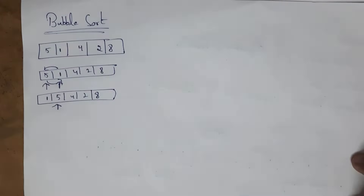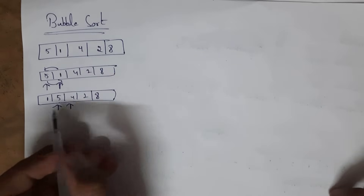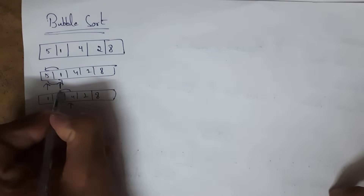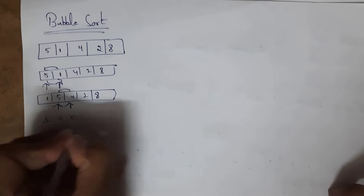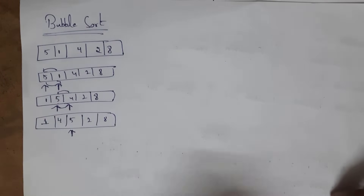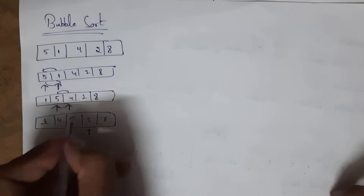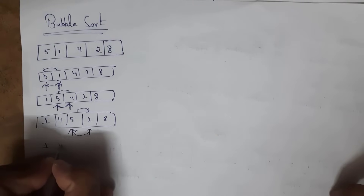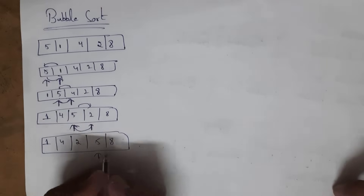After swapping, the array is: one, five, four, two, eight. Move the cursor one position forward to five and four. Both are in wrong position because four should be first, so swap again. After swapping: one, four, five, two, eight. Move cursor forward to five and two. Two should be first, so swap five and two. After swapping: one, four, two, five, eight. Move cursor to the last position — five and eight are in correct order, no swapping needed.